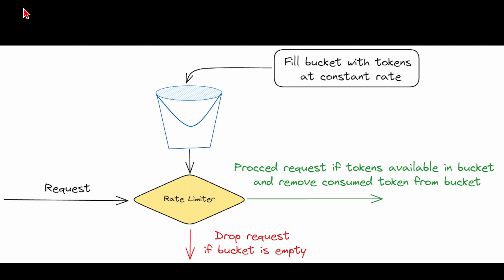The token bucket algorithm is one of the most popular and widely used rate limiting approaches due to its simplicity and effectiveness. Let me explain how it works. Imagine a bucket that holds some tokens. The bucket has a maximum capacity of tokens, and tokens are added to the bucket at a fixed rate — let's say 10 tokens per second. When a request arrives, it must obtain a token from the bucket to proceed. If there are enough tokens, the request is allowed and tokens are removed.